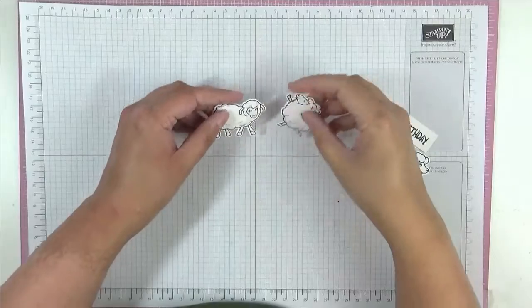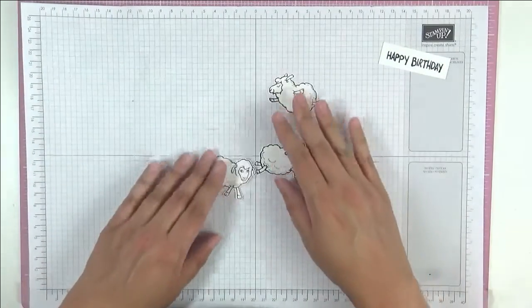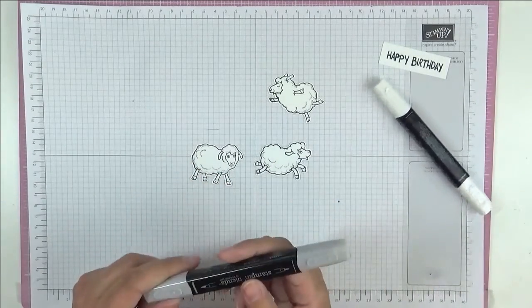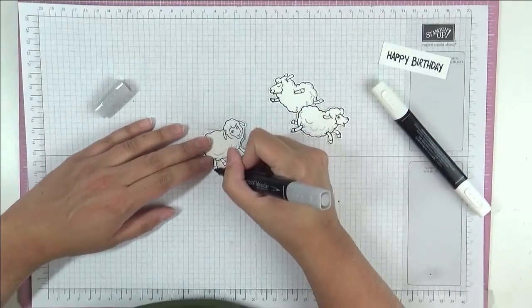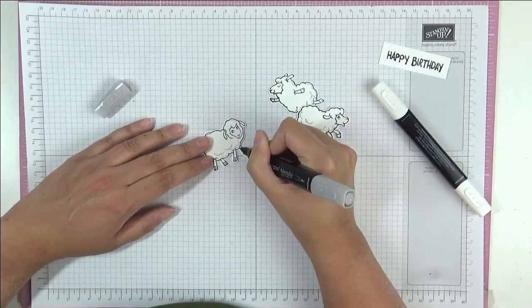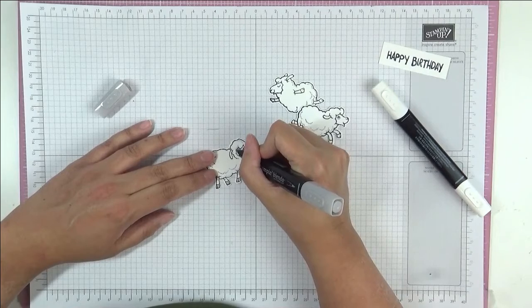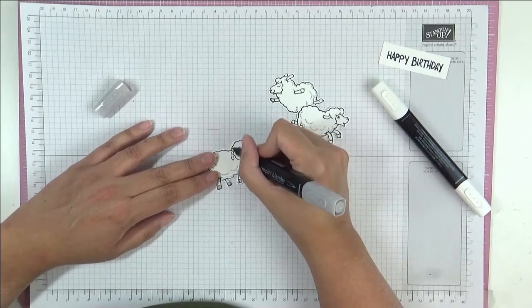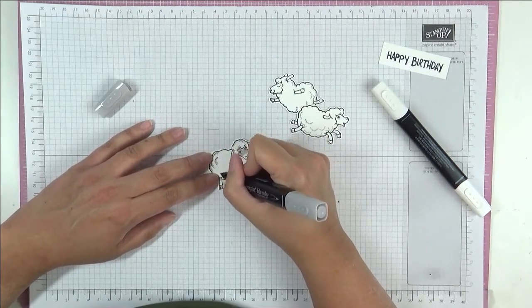Okay so all my little sheep are cut out. I also just cut out our sentiment using my trimmer. So now that my sheep are cut out I just want to give them a little bit of color. I'm going to use the color lifter and the light smoky slate to do this. I'm just going to add a little bit of color to various places just to give some color. Otherwise it looks a bit weird if they're totally snow white, because sheep are never snow white.